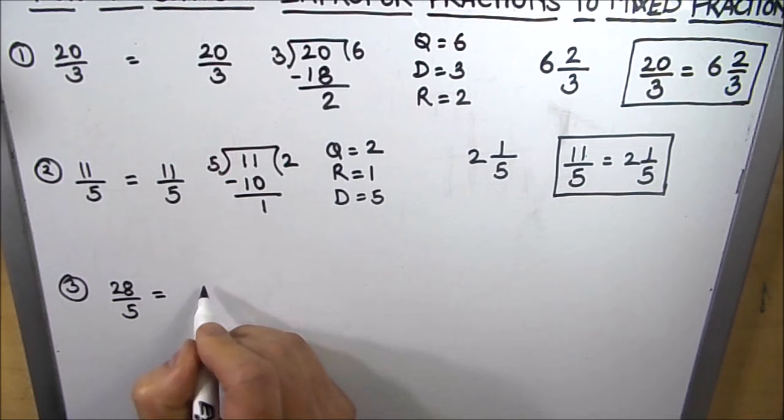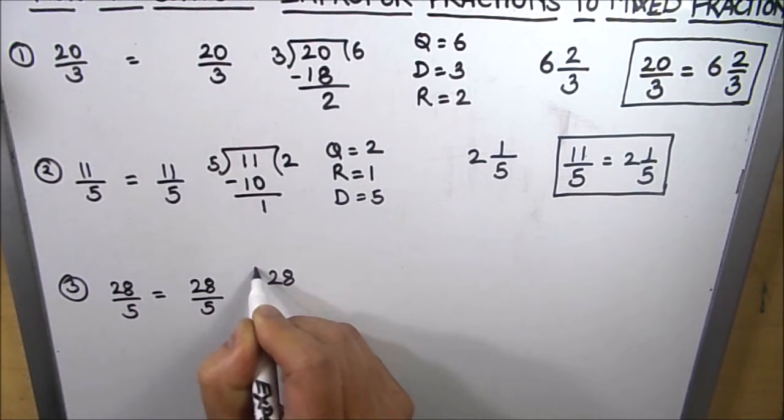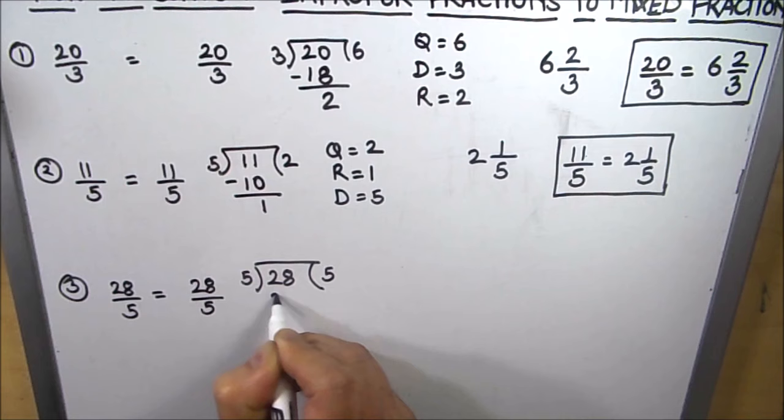Our next example is 28 over 5. So we are going to divide 28 by 5.